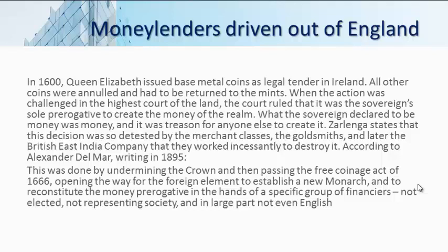All other coins were cancelled — you couldn't use any other coin. This action was challenged in the courts, and the court ruled that it was the sovereign's right to create money and nobody else had that right. They supported Queen Elizabeth, and it was treason for anyone else to create money. But the merchant classes, the goldsmiths and the financiers, did not like this at all because the privilege of money creation was taken away from them.